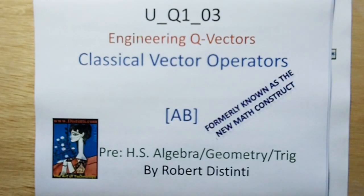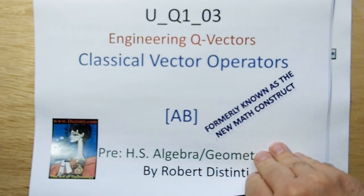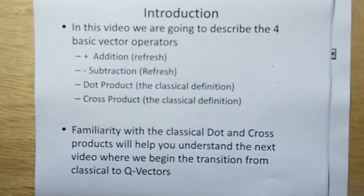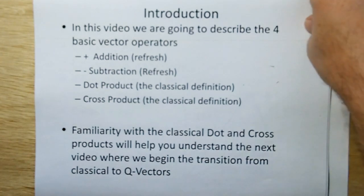Hi, welcome to Engineering Q Vectors, class number three. In this video we're going to talk about classical vector operators. There's four basic classic vector operators: addition, subtraction, the dot product, and the cross product. Familiarity with the classical cross and dot products will help you understand the next video where we begin the transition from classical to Q vectors.